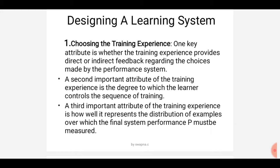So the first attribute is: which training experience provides direct or indirect feedback regarding the choices made by the performance system? For example, in the checkers game we took in last classes, the three main attributes for a well defined problem are: task is playing the checkers game, performance measure is winning the game, and experience is playing by itself. To get that experience, we need to provide direct and indirect feedback.